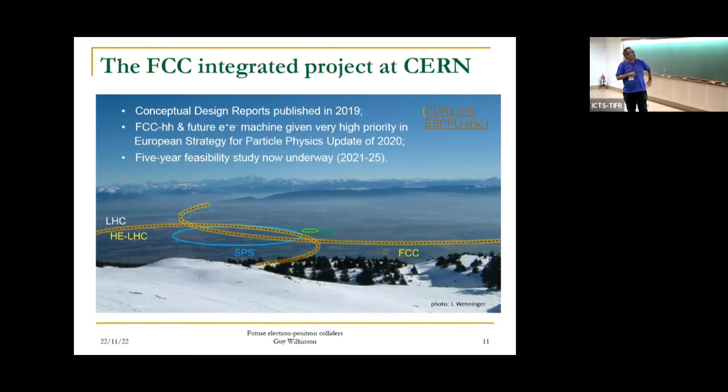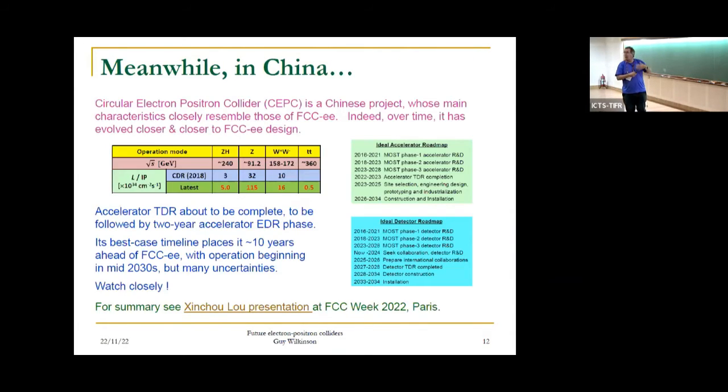Conceptual design reports were published in 2019. In the recent European strategy update, both the hadron machine and the e+ e- machines in general were given very strong encouragement and high priority. Now the FCC is undergoing a five year feasibility study which will conclude in 2025.